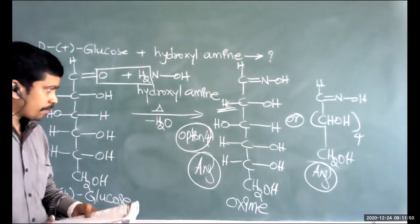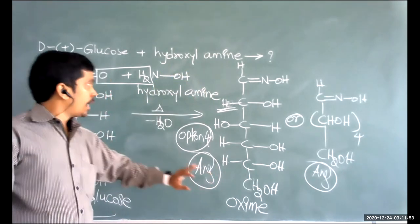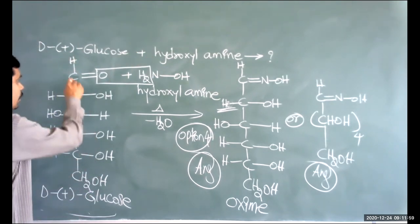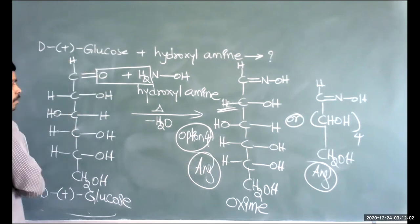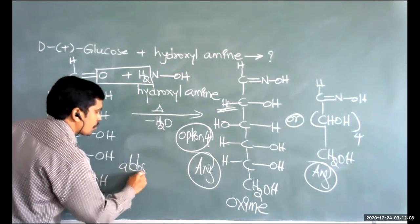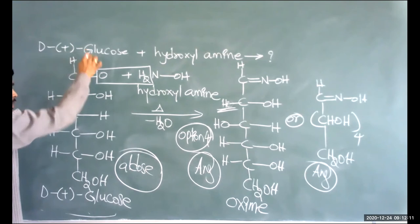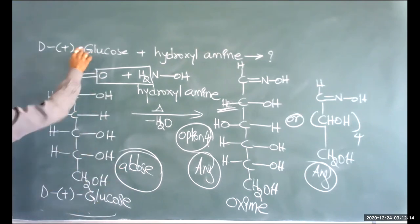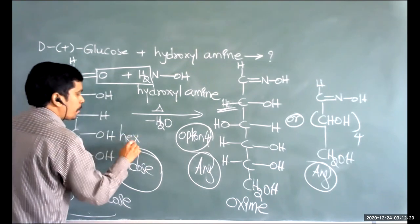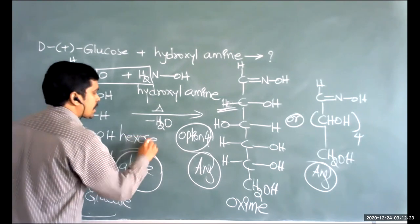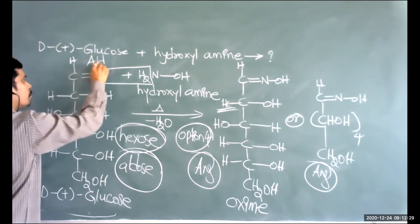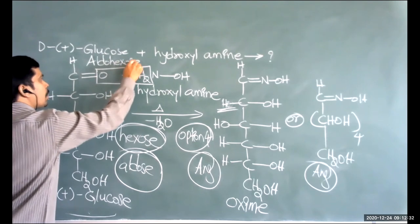D+ glucose is an aldohexose and a reducing sugar because its aldehyde group can reduce Tollens' reagent. D+ glucose contains six carbons — hence hexose — and contains an aldehyde group — hence aldose. Aldose + hexose = aldohexose. And D+ glucose tastes sweet, making it an example of a simple sugar.